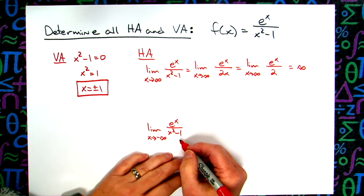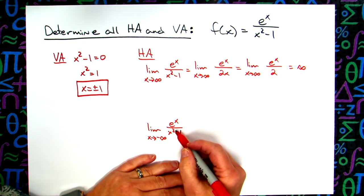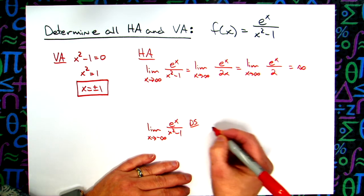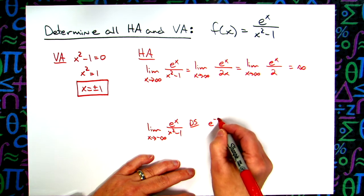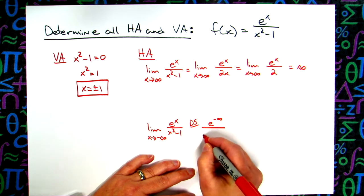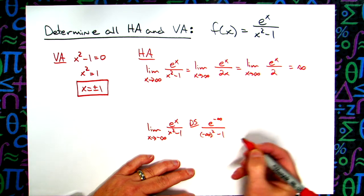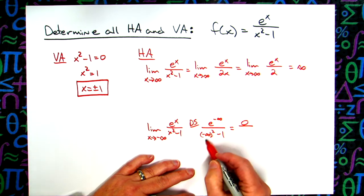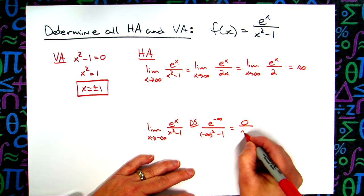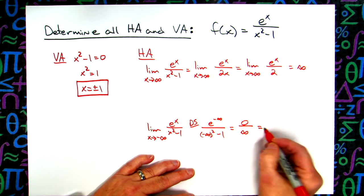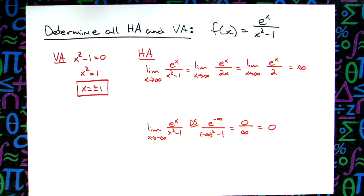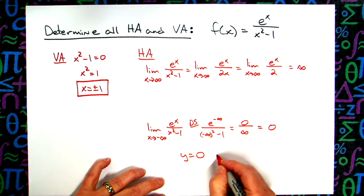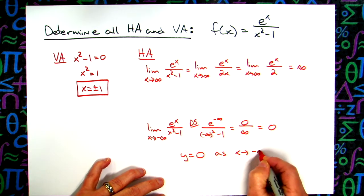Now we try the limit as x approaches negative infinity using direct substitution. Plugging in: e raised to negative infinity gives 0 on top, and negative infinity squared minus 1 is just a very large infinity on the bottom. So the result goes to 0. We can therefore conclude that y = 0 is a horizontal asymptote as x approaches negative infinity.